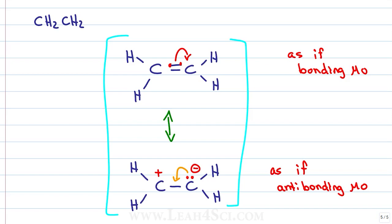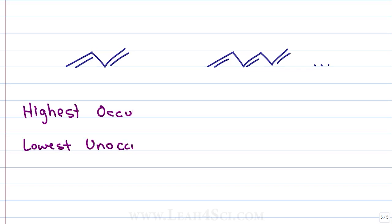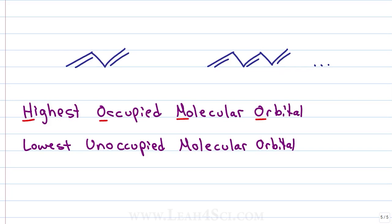But this is just one pi bond with 2 electrons. What about a more complex system with 4, 6 or more electrons and lots of resonance involved? Remembering that not all of the molecular orbitals will be occupied brings us to the concept of highest occupied molecular orbital or HOMO and lowest unoccupied molecular orbitals or LUMO.